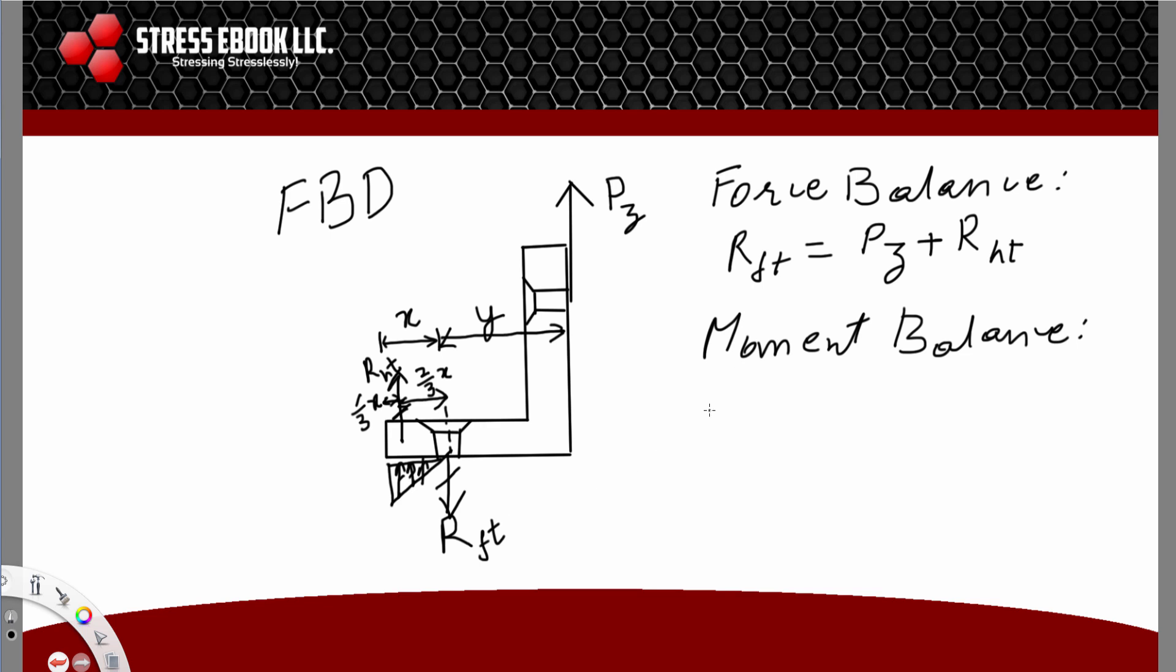When we do a moment balance about the axis of the fastener, we have PZ times Y, and this has to equal RHT, which is the reaction due to heel-toe, times the distance from RHT, which is two-thirds X from the center of the fastener.